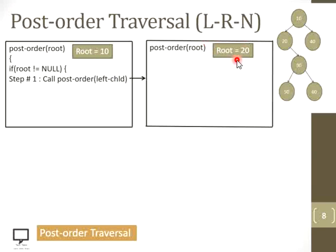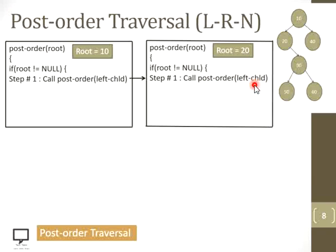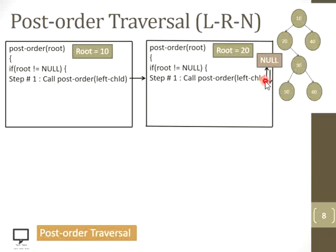In the window for root equals 20, we check root is not null — condition is true. So again we call post-order function passing its left child recursively. Here you can see that 20's left child is null. So when we call the function with null, the condition root not equal to null is false, and it returns back to the same calling function. So it returns back and executes the next statement.